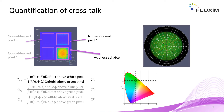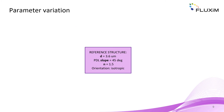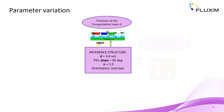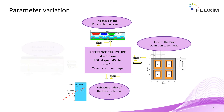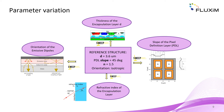Furthermore, we analyze the far field color in order to detect potential color gamut decrease due to crosstalk. We start with a reference structure defined by the distance between the OLED and the color filter plane, the slope of the PDL, the refractive index of the filler material, and the orientation of the emitting dipoles. One by one we sweep each parameter while keeping the others fixed and analyze the optical crosstalk.